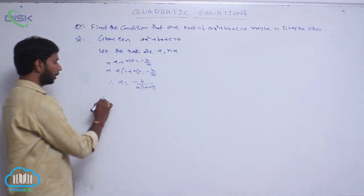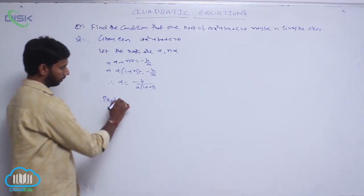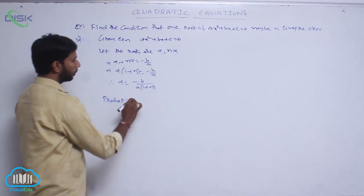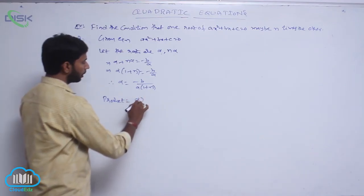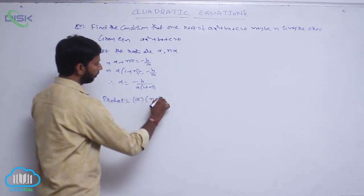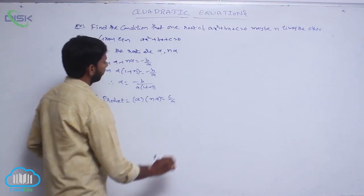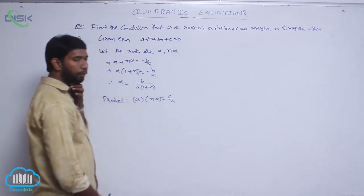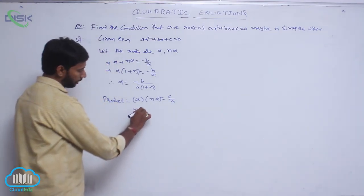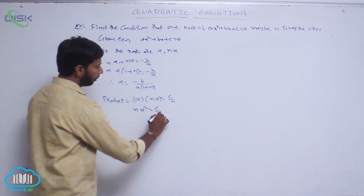Next, the product of roots: alpha × n·alpha = c/a, that is n·alpha² = c/a.